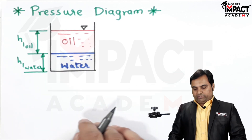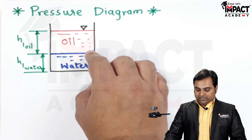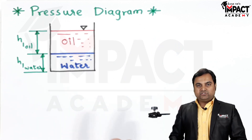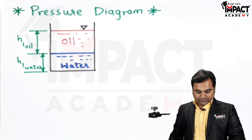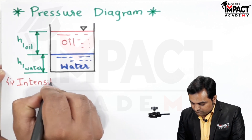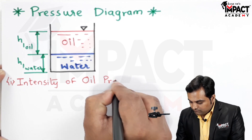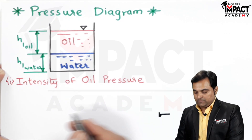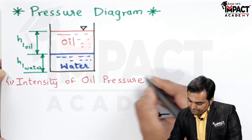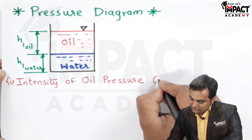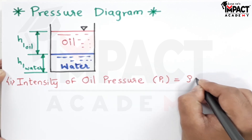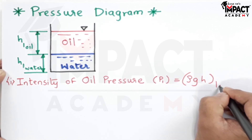Now, basically what we have to find out here is how much is the pressure exerted by both the liquids acting on one side of the tank, that is on this vertical face. In order to get that, first we need to find out the intensity of pressure. The intensity of oil pressure, that is the pressure exerted by the oil, will be denoted as P suffix 1, given by the formula ρgh, that is for oil.